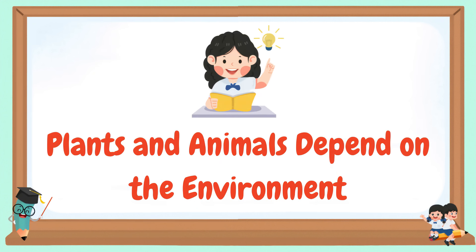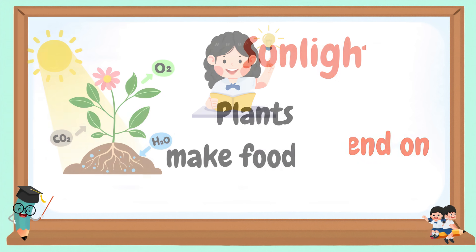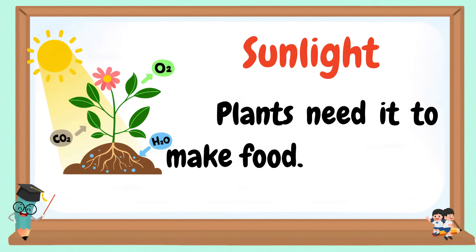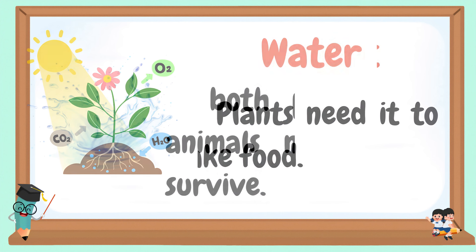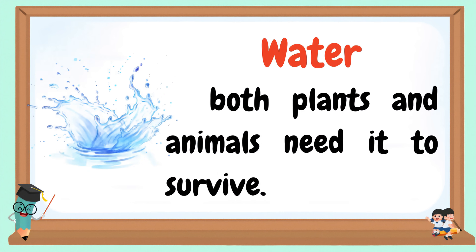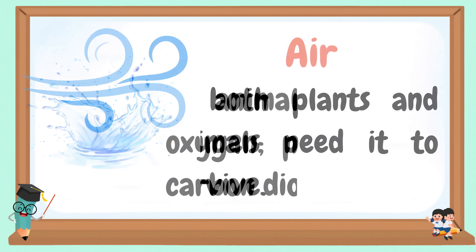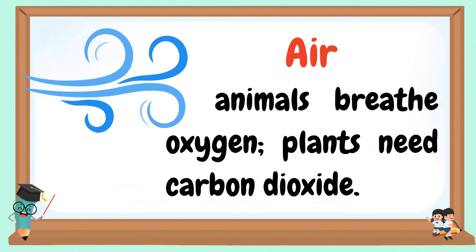Plants and animals also depend on the environment. Sunlight: plants need it to make food. Water: both plants and animals need it to survive. Air: animals breathe oxygen, while plants need carbon dioxide.